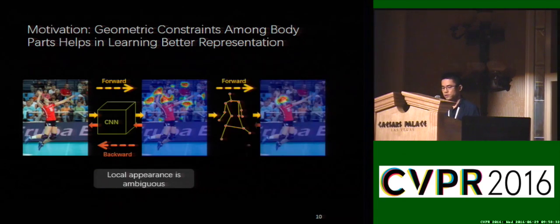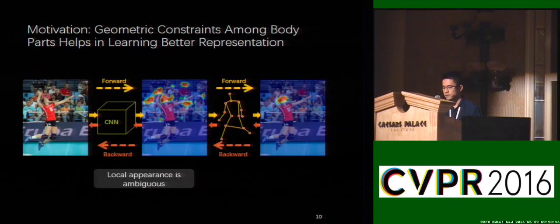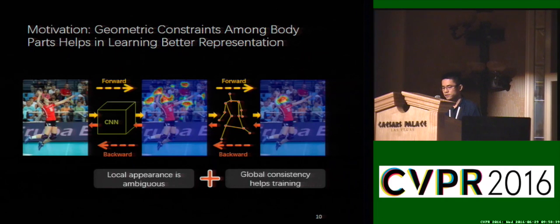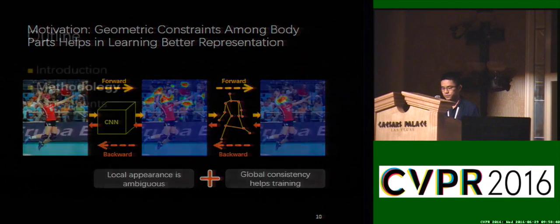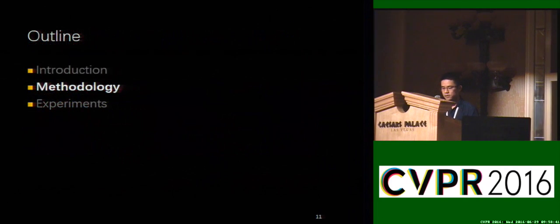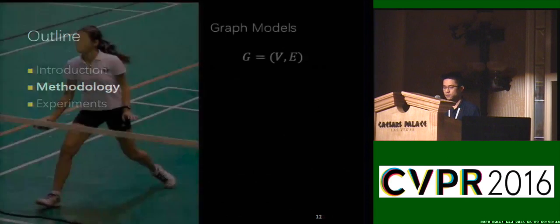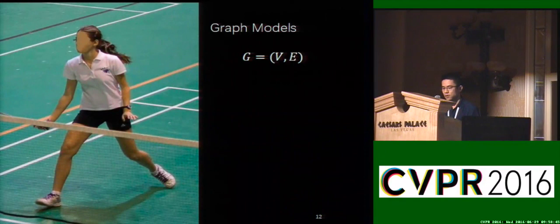By considering the geometric relationships between body parts during the training stage, we are able to learn better representations. We formulate the human pose estimation problem by using a graph model G, where the vertices specify the position and mixture type of body parts.